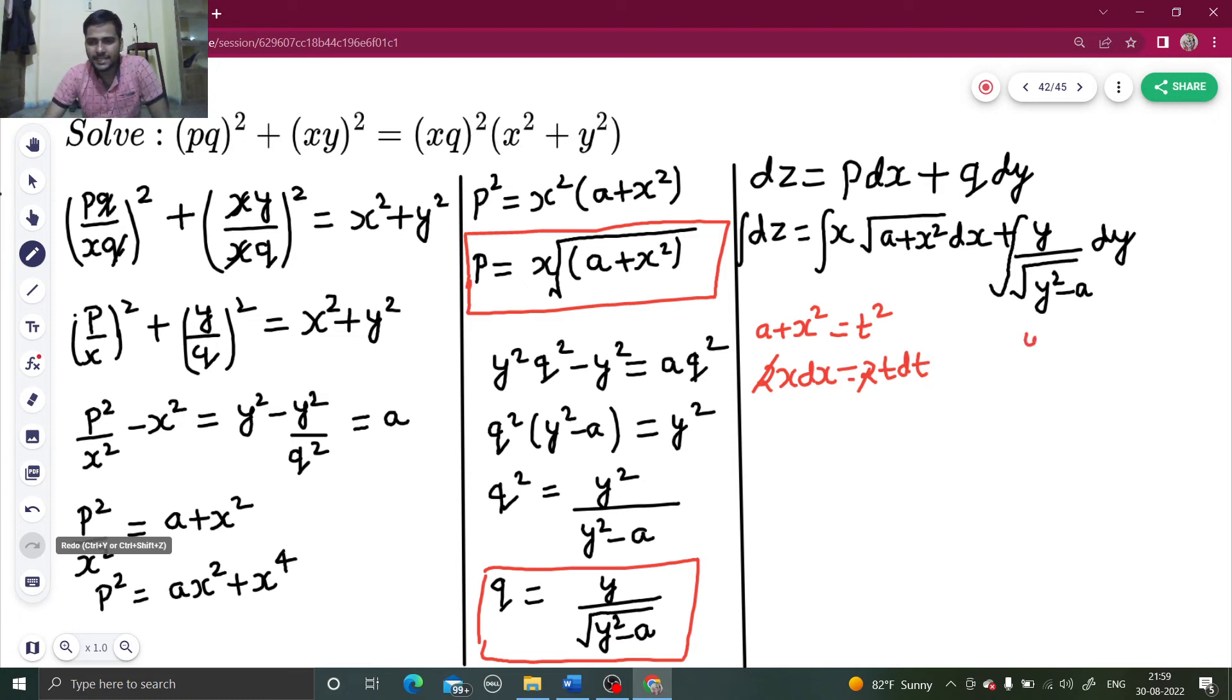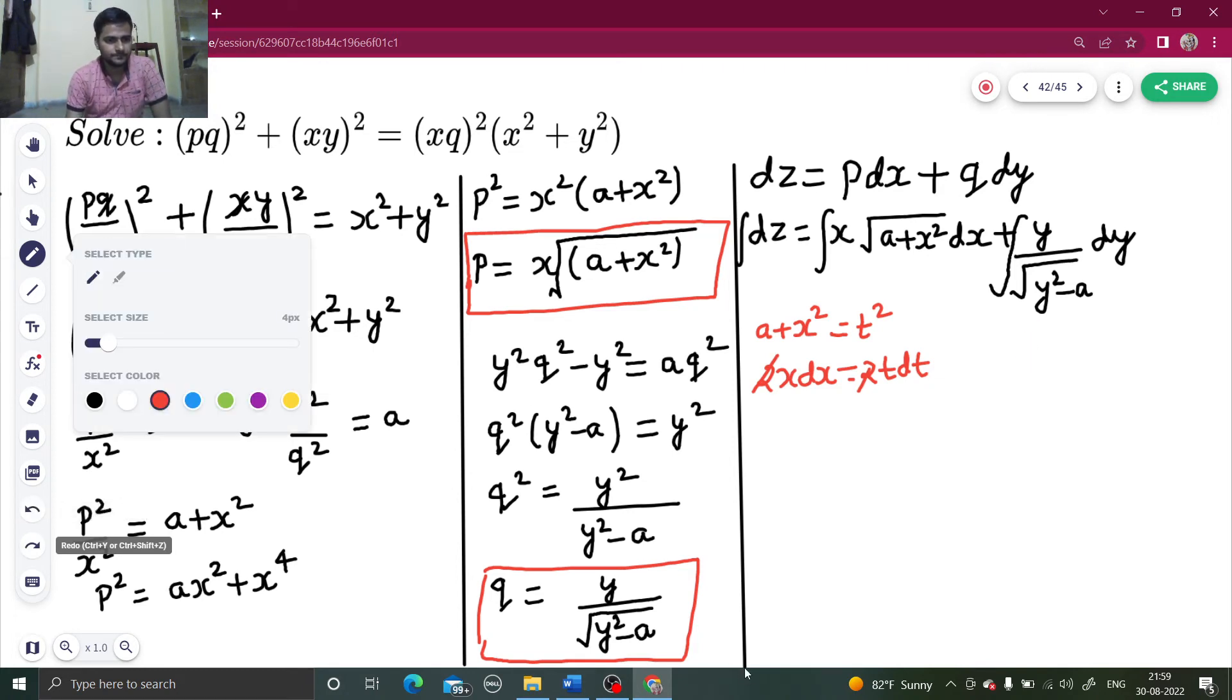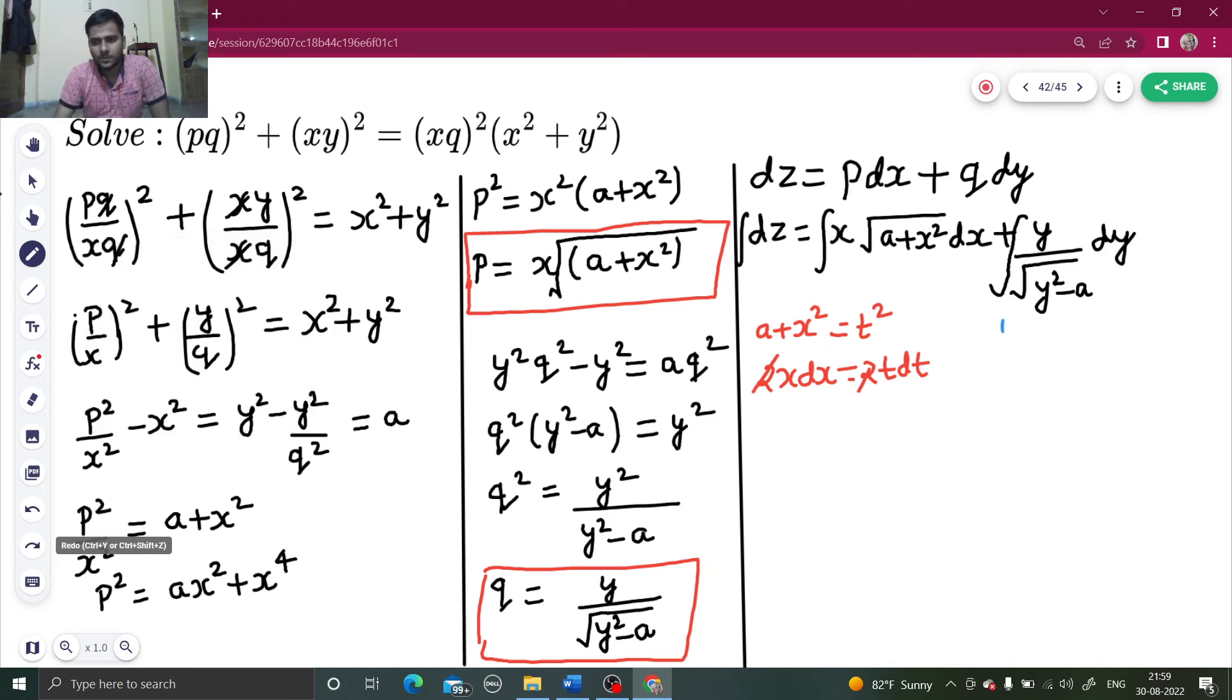For the second integral, Y squared minus A equals U squared, so 2Y dY equals 2U dU. 2 is getting cancelled, so Y dY equals U dU.